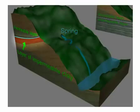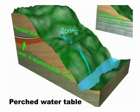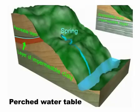A layer of impermeable rock or clay can create a perched water table. Springs can result where groundwater emerges from a perched water table.